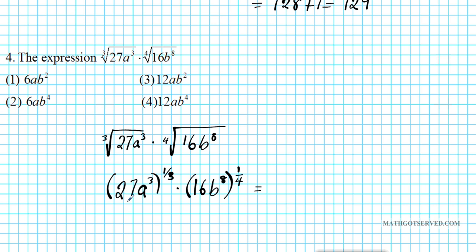Can I express 27 as a power of 3? Yeah, 27 can be written as 3 to the 3rd power. So we have 3 to the 3rd times a to the 3rd, everything raised to the 1/3 power. Can I express 16 as a power of 4? Recall 16 is 2 to the 4th power because 2 times 2 times 2 times 2 is 16. So 2 to the 4th and then b to the 8th raised to the 1/4.